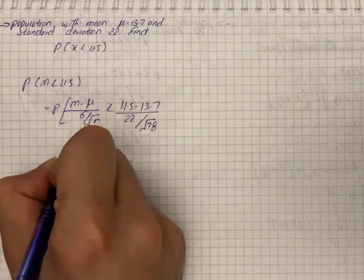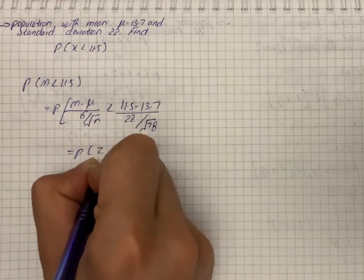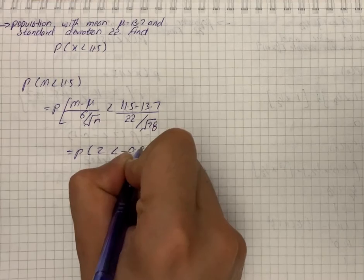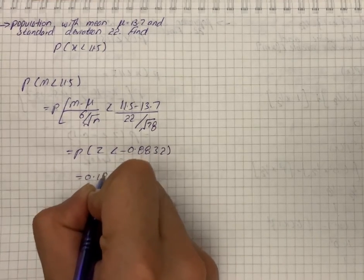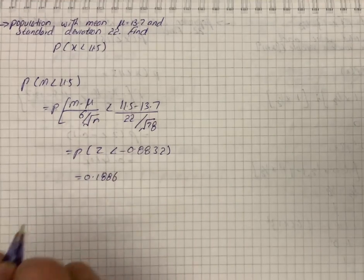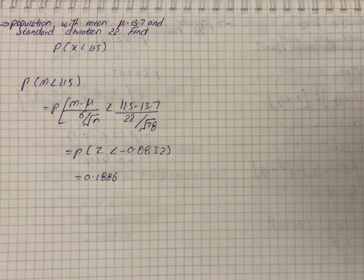That gives us P(z < -0.8832) and then we have 0.1886 as our required probability.